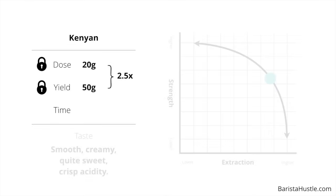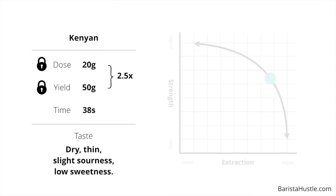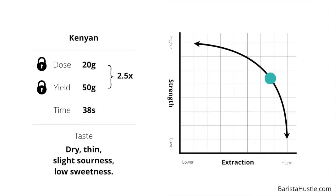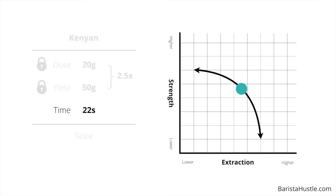Let's try grinding even finer. Our dose and yield are still locked in and we adjust the grinder even smaller. This shot takes 38 seconds to achieve the 50-gram yield. We taste it and the mouthfeel is actually less satisfying than the last shot — a little bit dry and the acidity is less balanced. At a certain point, grinding finer will actually reduce the extraction and strength. This is because the grinds are so fine that they're causing small blockages. The best way to find this spot is to lock in dose and yield, then keep grinding finer and finer until you find the strength and extraction actually drop backwards.